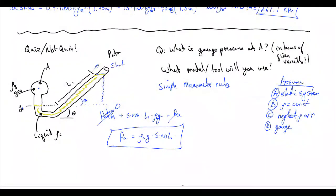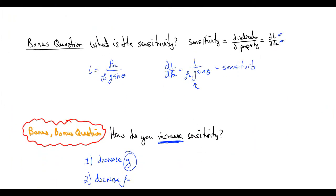you can decrease theta, right? Because sine of theta as it approaches zero is zero, and sine of theta at 90 degrees, if this were straight up and down, would be one. So as we make theta less and less, we increase the sensitivity of our manometers.